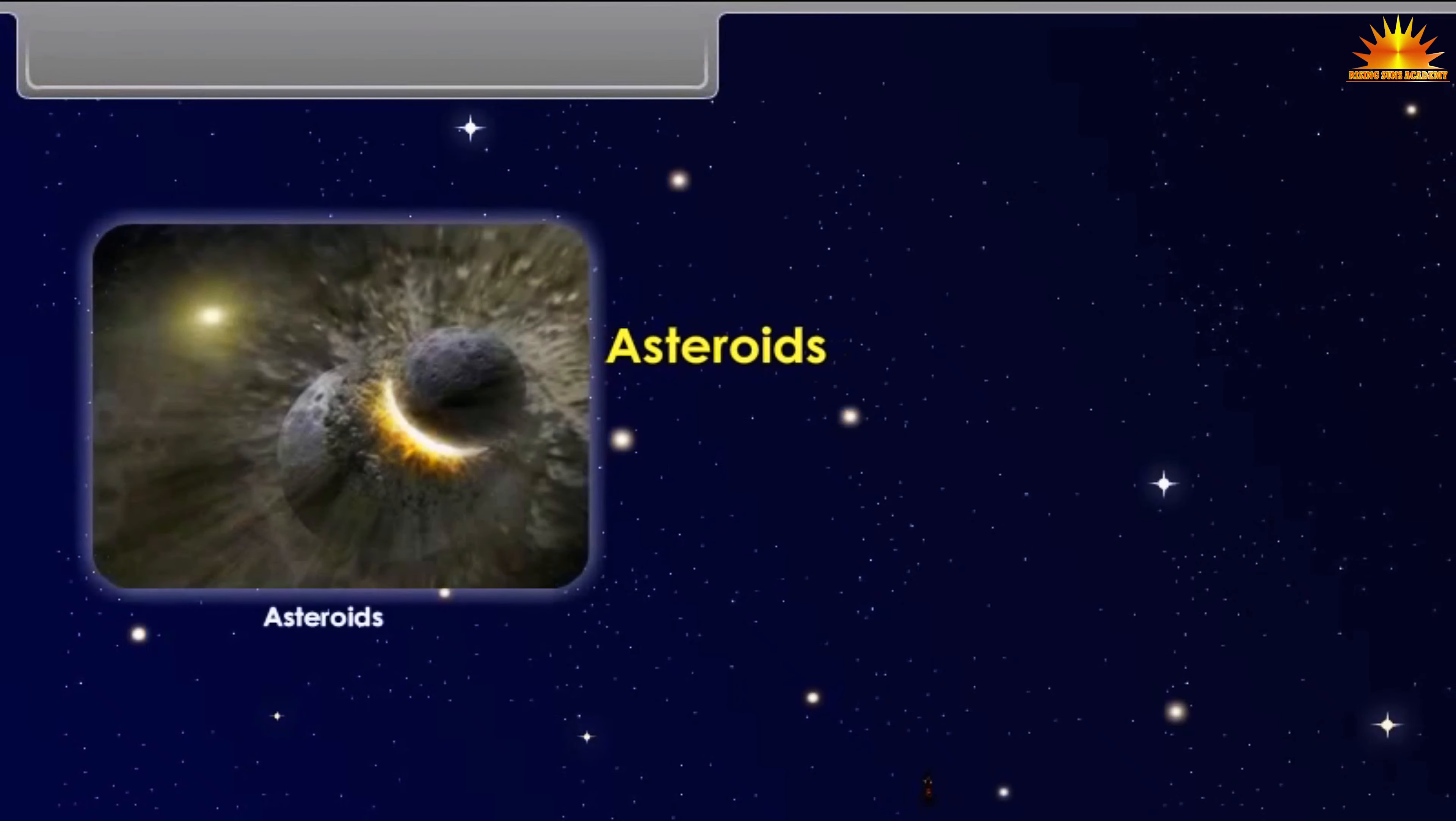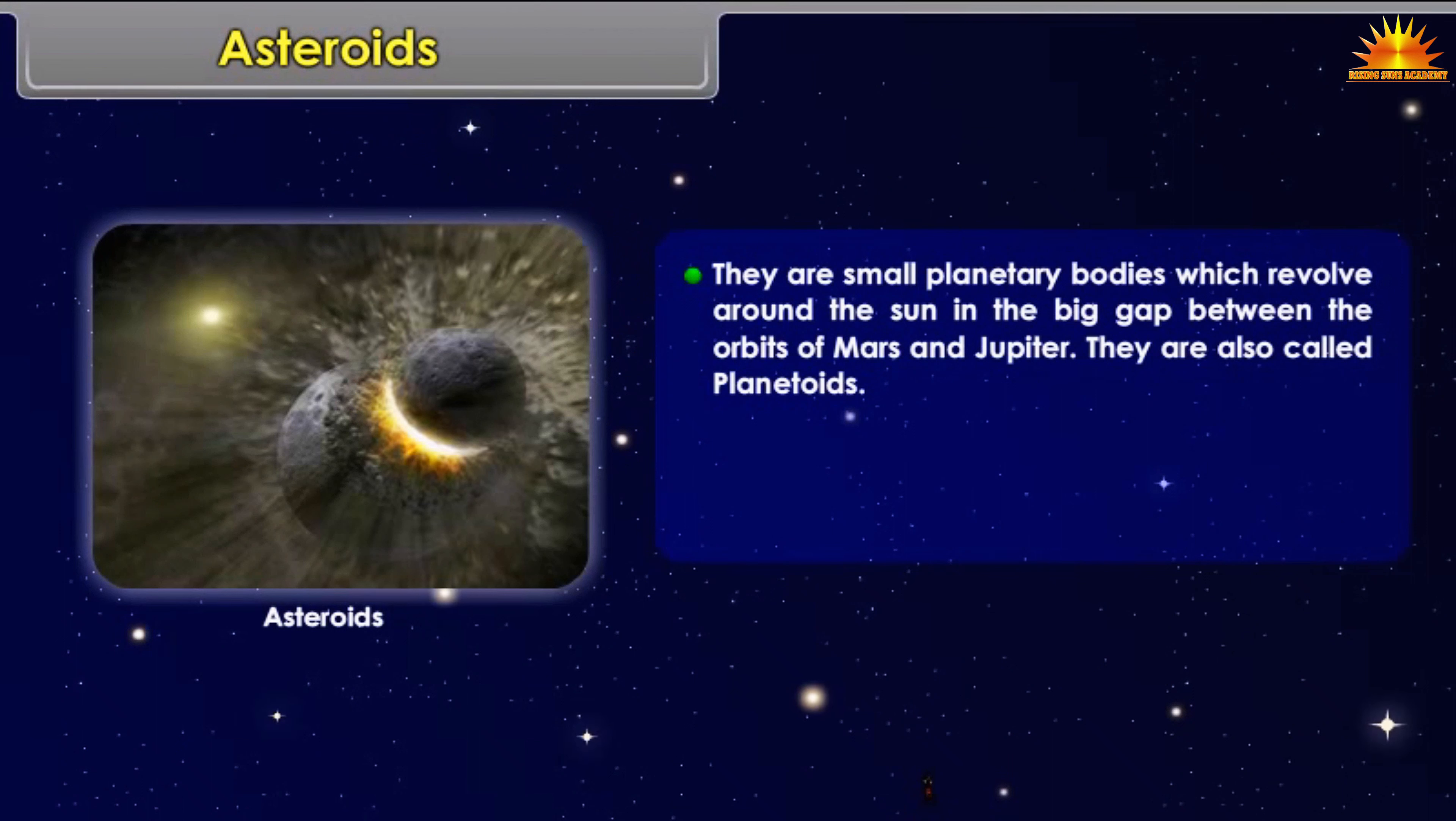Asteroids: They are small planetary bodies which revolve around the Sun in the big gap between the orbits of Mars and Jupiter. They are also called planetoids. The largest asteroid is Ceres. Asteroids are parts of a planet which exploded many years back.